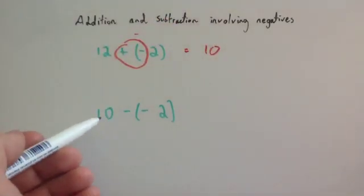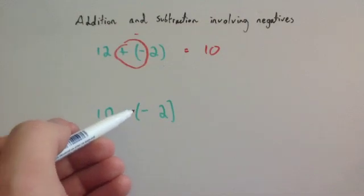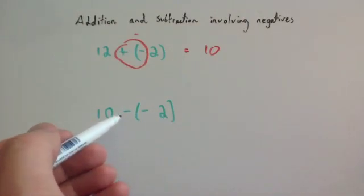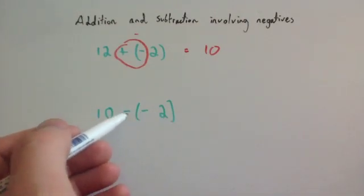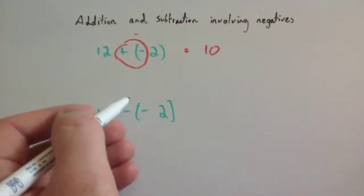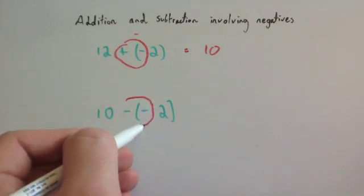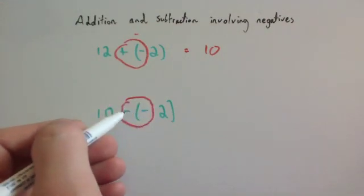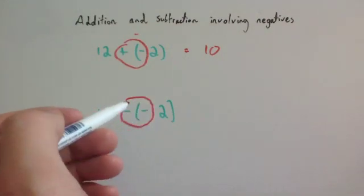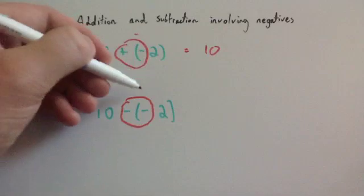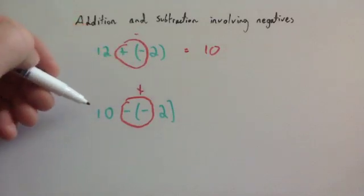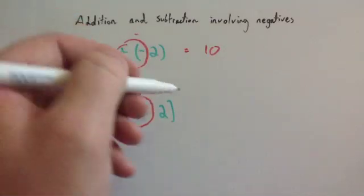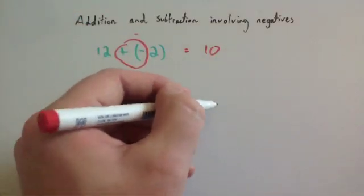Next: 10 subtract negative 2. Again, you've got two signs directly beside each other. You replace those two minus signs — subtract a negative, or two minuses — with a plus. So you do 10 plus 2, and 10 plus 2 is equal to 12.